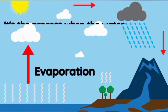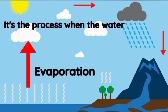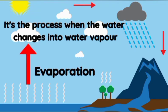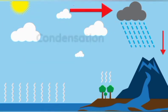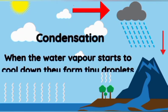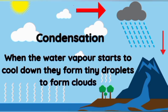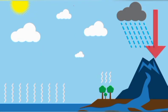Evaporation is the process when the water changes into water vapor. Condensation: when the water vapor starts to cool down, they form tiny droplets to form the clouds. This process is called condensation.